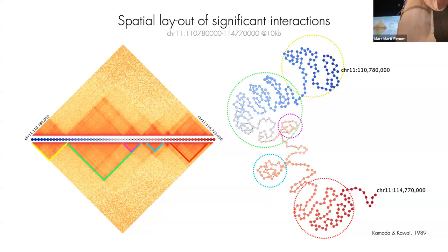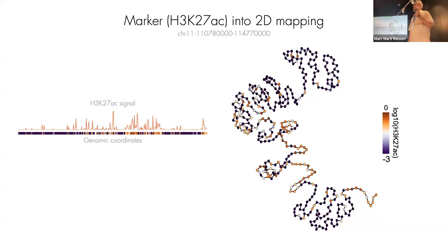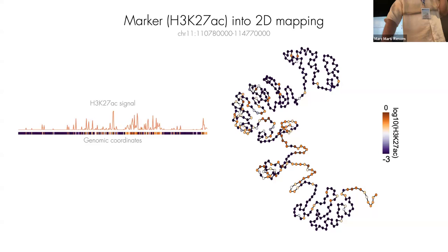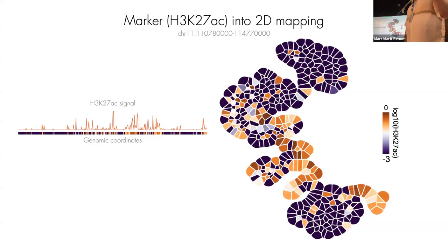It's very unlikely that any individual cell has this exact structure — some will have the first state, some the second, some part of the third. The average is what you observe. When we also have K27 acetylation signal, we can color each point in this layout by the coverage of K27 acetylation. By eye, you start seeing it's not randomly distributed — some regions are more brownish (high acetylation) and some more bluish (low acetylation).